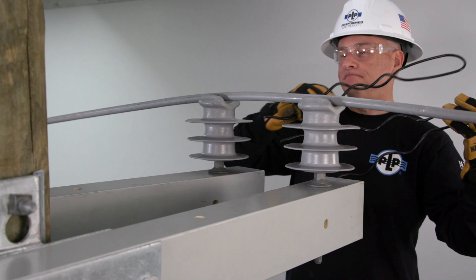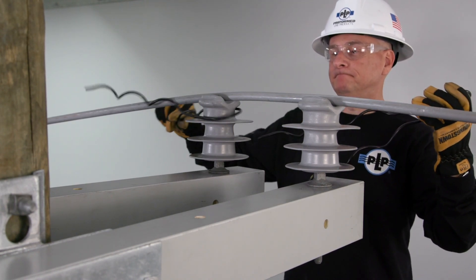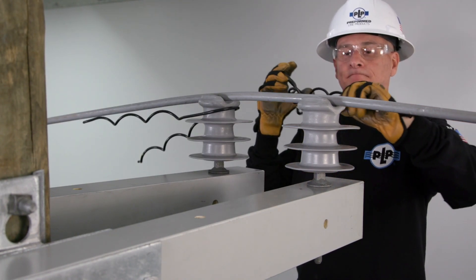Slide the first tie around the neck of the first insulator with the legs parallel to the conductor. The loop should be tight against the insulator.